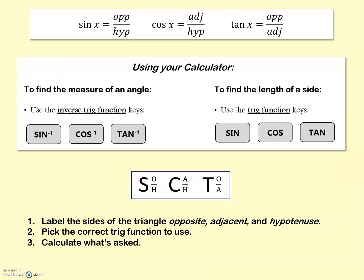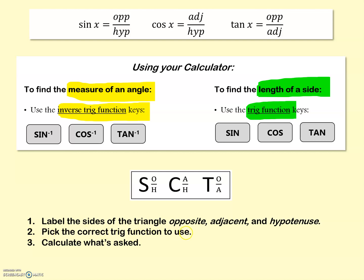Just as a reminder: when you're using your calculator, if a problem asks you to find the measure of an angle, you're going to be using the inverse trig function keys — that's sine with a little negative one. If it asks you to find the length of a side, you're going to be using the regular trig function keys: sine, cosine, and tangent. Whenever you're given a problem, label the sides of the triangle — opposite, adjacent, and hypotenuse — so it's clear. That'll allow you to pick the correct function to use, and then calculate what's asked.